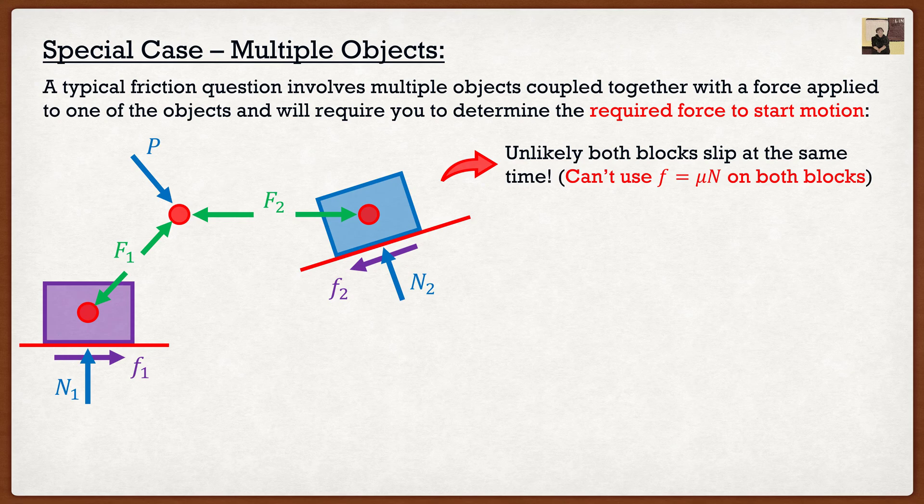one thing is going to slip before the other thing. So we can't use this formula on both of the boxes, we have to use it on one, and then solve for the other one, and vice versa.